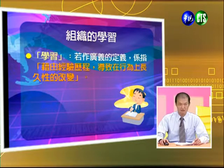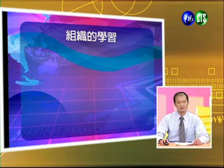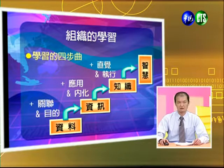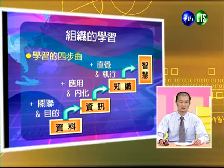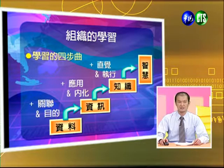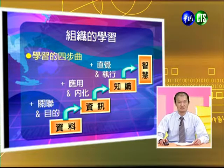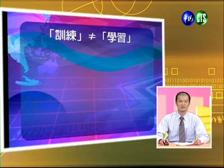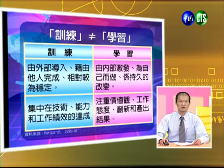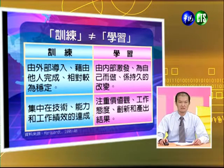組織裡面的學習也是相當重要的。學習做廣泛的定義，是指藉由經驗歷程導致在行為上長久的改變。學習有四個步驟：一開始是資料的階段，透過關聯把它轉化為資訊，應用之後就變成了知識，再透過執行與直覺轉換為自己學習所得到的智慧。訓練與學習在做法上有些差異：訓練是由外部導入，藉由他人來完成，相對比較穩定；而學習是要內部自己來激發，為自己而做，是比較持久性的改變。